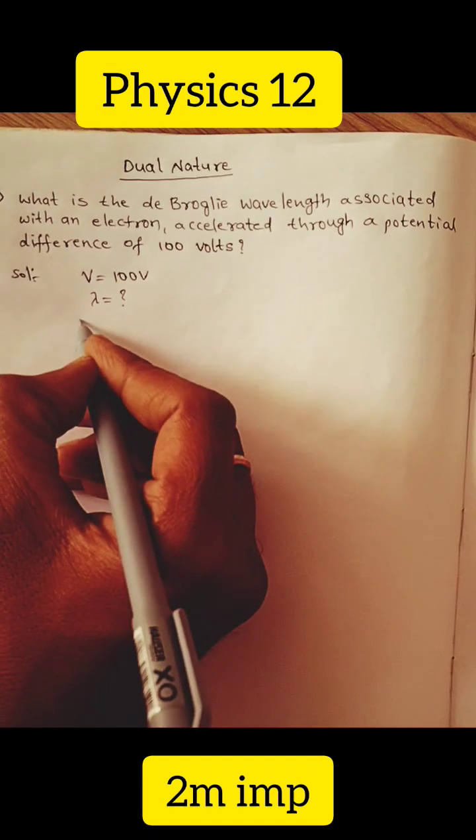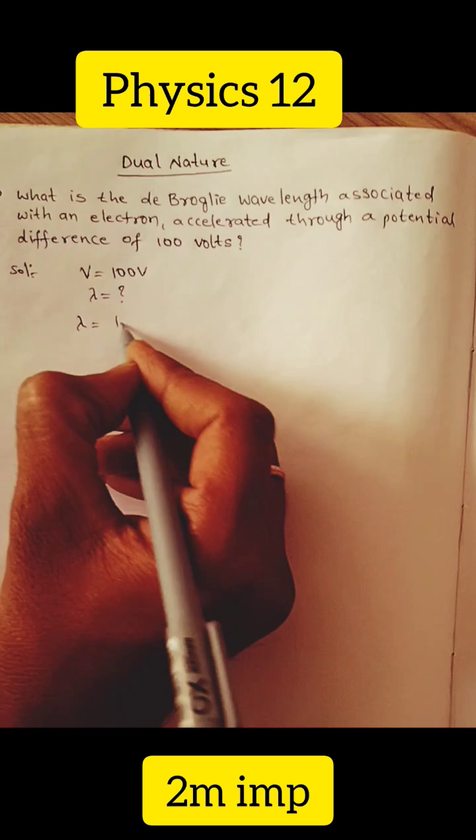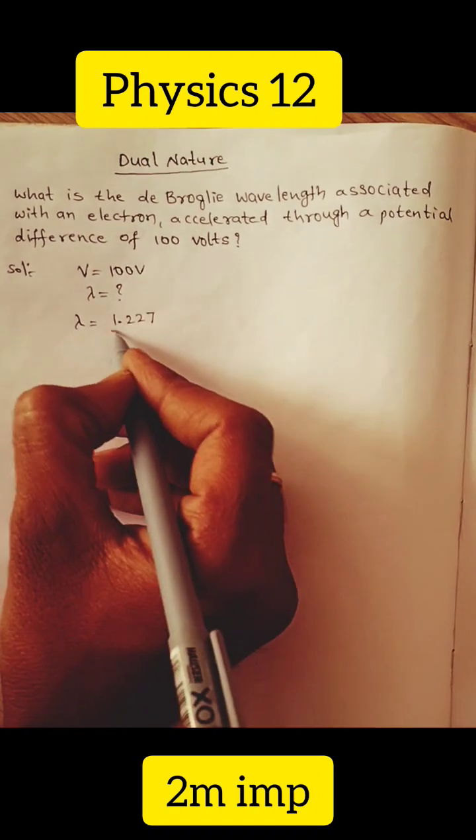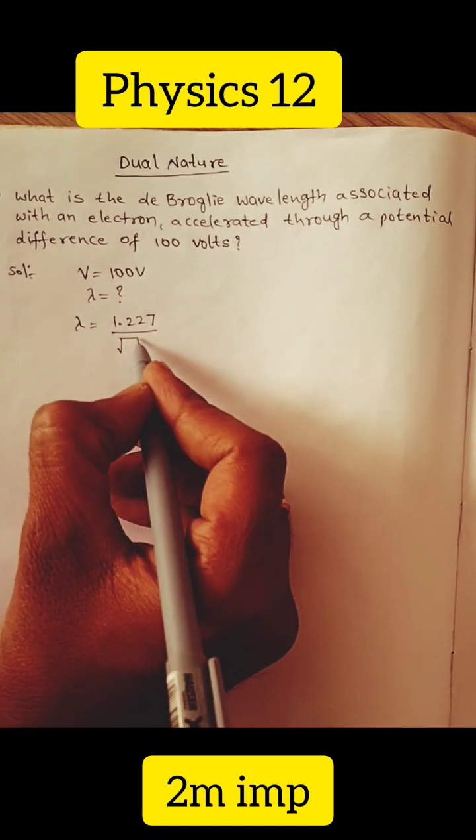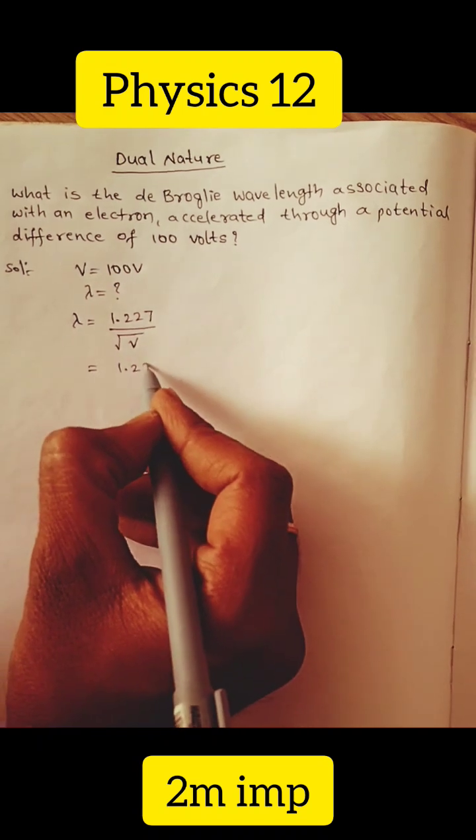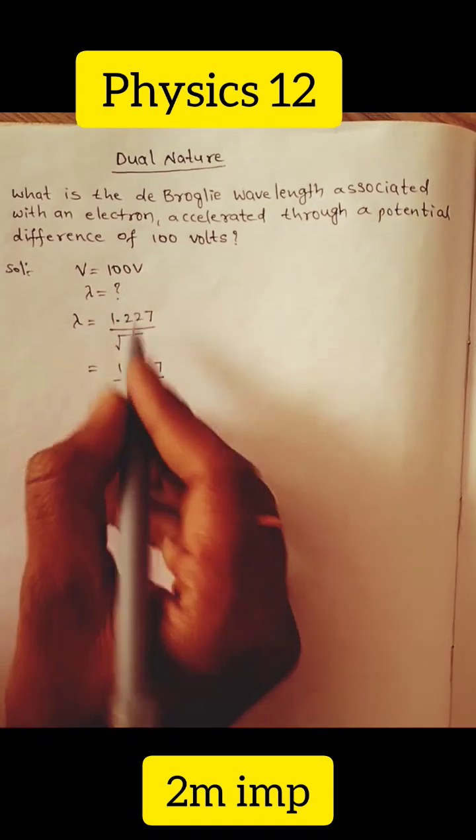Lambda equals 1.227 by under root V, where V is the potential difference. So 1.227 by, V is 100.